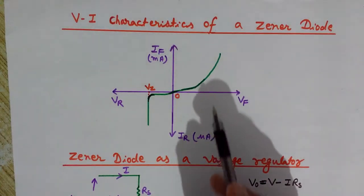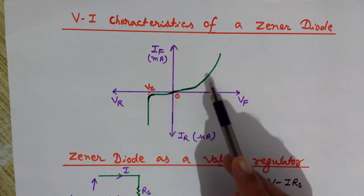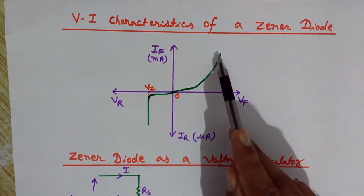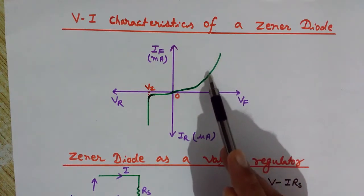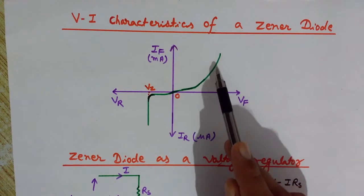Now let's notice this V-I characteristic of the Zener diode. You can see that in the forward biasing, it seems like the forward and reverse biasing curve is same as the case of a normal diode.